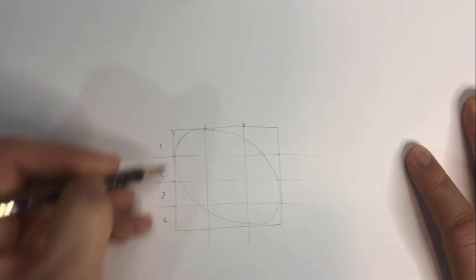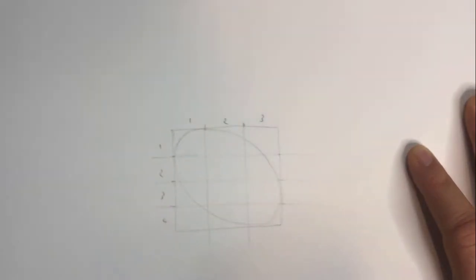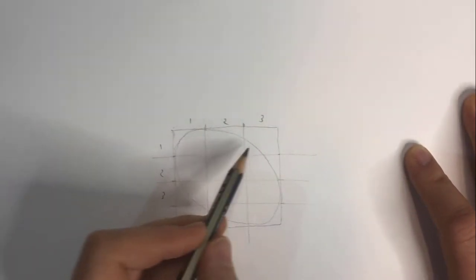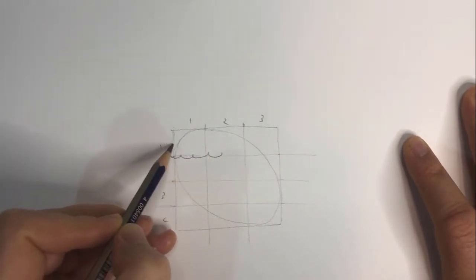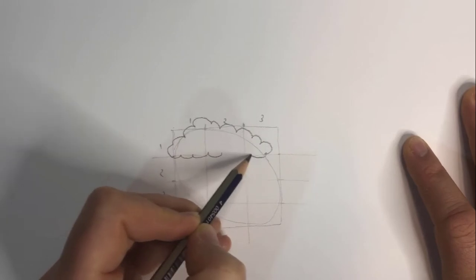We're going to use these guides to position all the elements of the sheep's face. So in the top row, draw a cloud-like shape that runs along the first horizontal line down from the top, and extends slightly further out on the ends and over the top of the head.